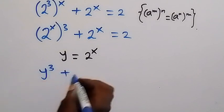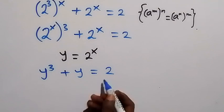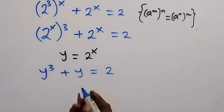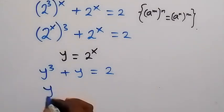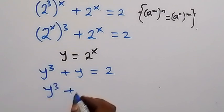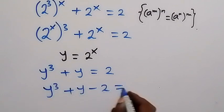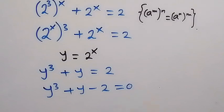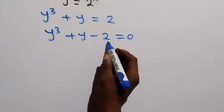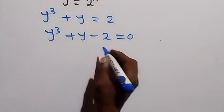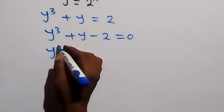So we have y cubed plus y equals to 2. Taking 2 to the other side gives us y cubed plus y minus 2 equals to 0. From here, we can separate minus 2 as minus 1 minus 1, so we have y cubed plus y minus 1 minus 1.